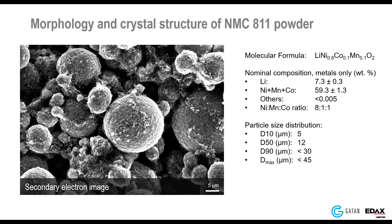The sample we're going to look at today is an NMC 811 powder — that 8:1:1 ratio — which includes approximately 25 atomic percent lithium, or 7.3 weight percent. The powder sample consists of approximately spherical secondary particles roughly 5 to 30 microns in diameter. These secondary particles are actually agglomerates of smaller primary particles, which we can see using crystal orientation data collected using EBSD.